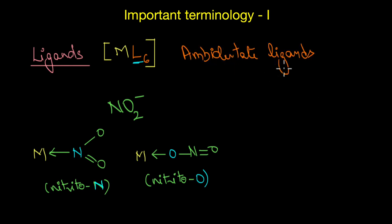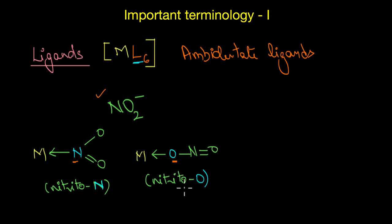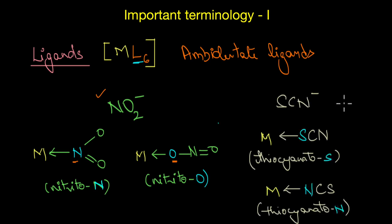Let's now look at a different type: ambidentate ligands. Ambidentate ligands contain two different donor atoms and can coordinate with the central metal ion through either atom. For example, NO2− can coordinate through the nitrogen atom — giving a nitrito-N complex — or through the oxygen atom — giving a nitrito-O complex. Similarly, thiocyanate (SCN−) can coordinate through sulfur, called thiocyanate-S, or through nitrogen, called thiocyanate-N.